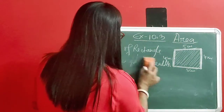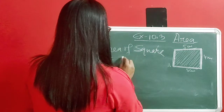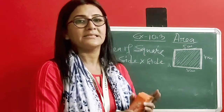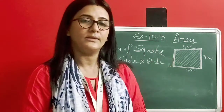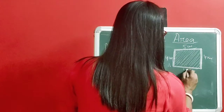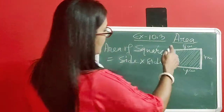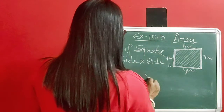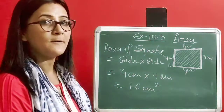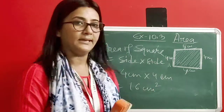For the area of a square, it is side into side. Since all sides of a square are equal — suppose each side is 4 cm — then the area is 4 cm into 4 cm, which equals 16 cm squared. That is the area of the square.